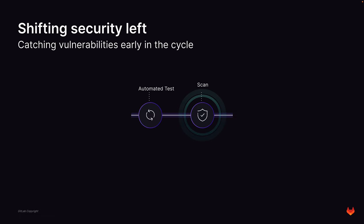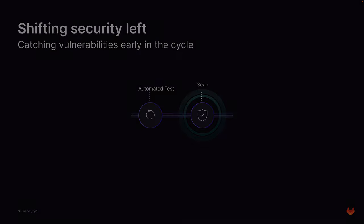Security and compliance are paramount in the organization. Shifting security left is a mandate to detect and resolve defects as early as possible in the software development process. It is much cheaper and simpler to fix vulnerabilities early in the development lifecycle than once the application is in production, where unscheduled outages can affect end users and revenue.